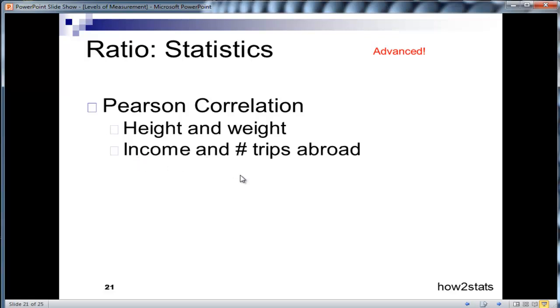People can score zero on income, and it's a continuous scale. Number of trips abroad, probably a positive correlation. Brain size and number of items memorized would be another example of two variables measured on a ratio scale. We would estimate their association based on a Pearson correlation, because a Pearson correlation can and should be used on ratio data.